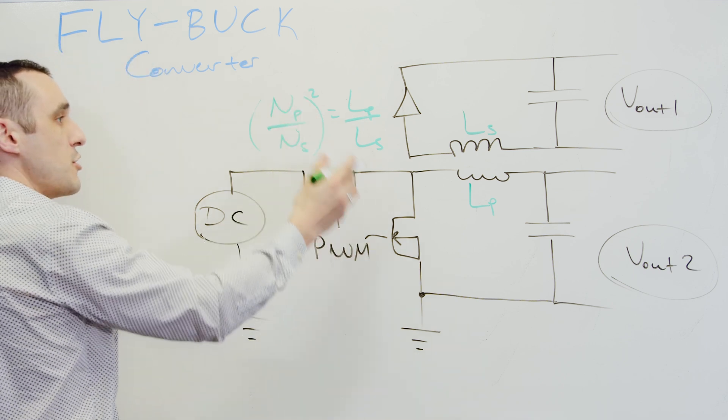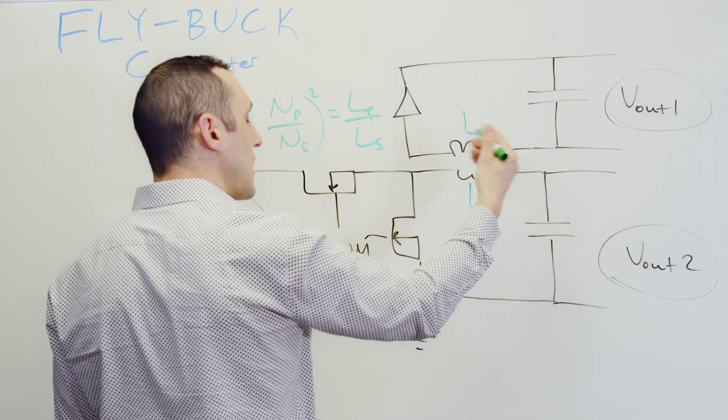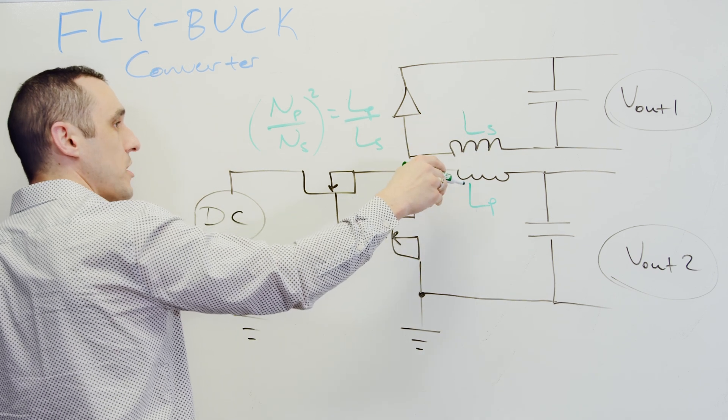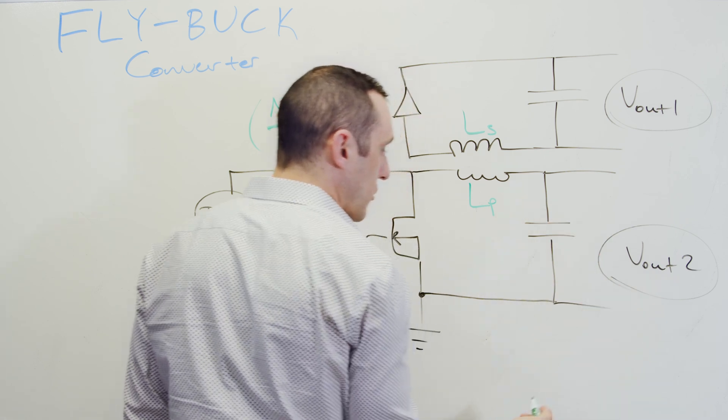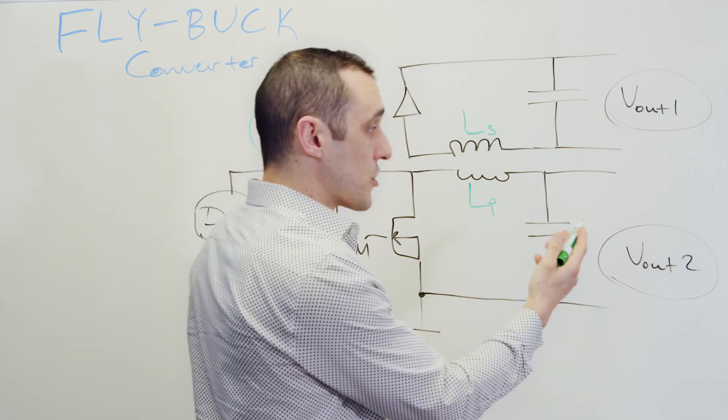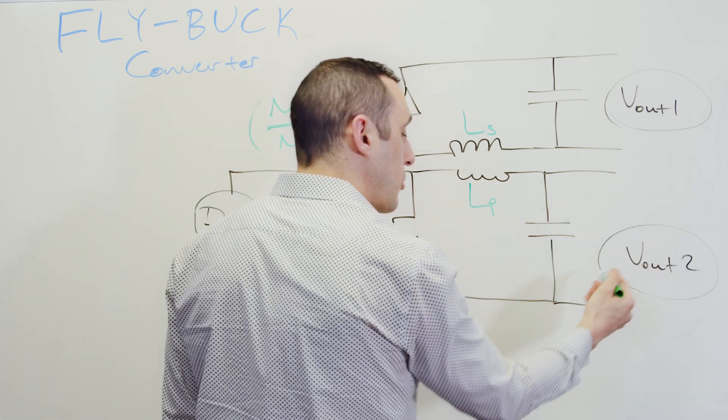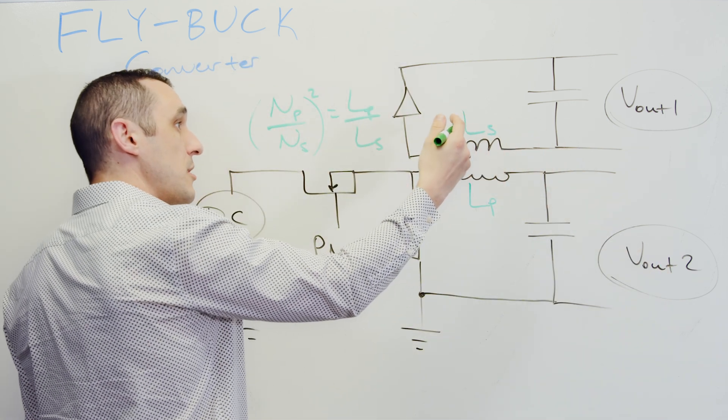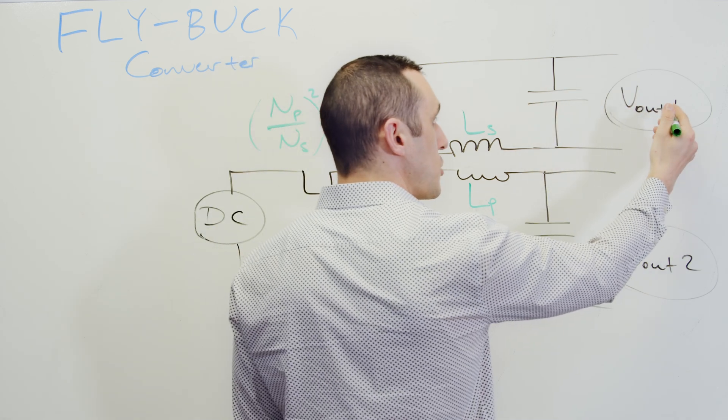So this is how you would then design for the inductances that you want to have between these two coils in the transformer. So your LP value is going to determine of course the ripple in this output voltage number two.